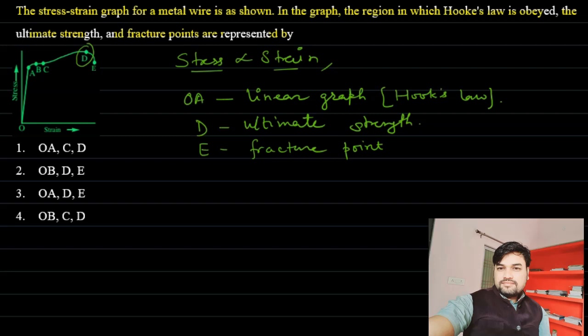So which option will be correct? Hooke's law region is OA, D is the ultimate strength, and E is the point of fracture. So option 3 is the correct answer. Hope you find the solution understandable. Thank you.